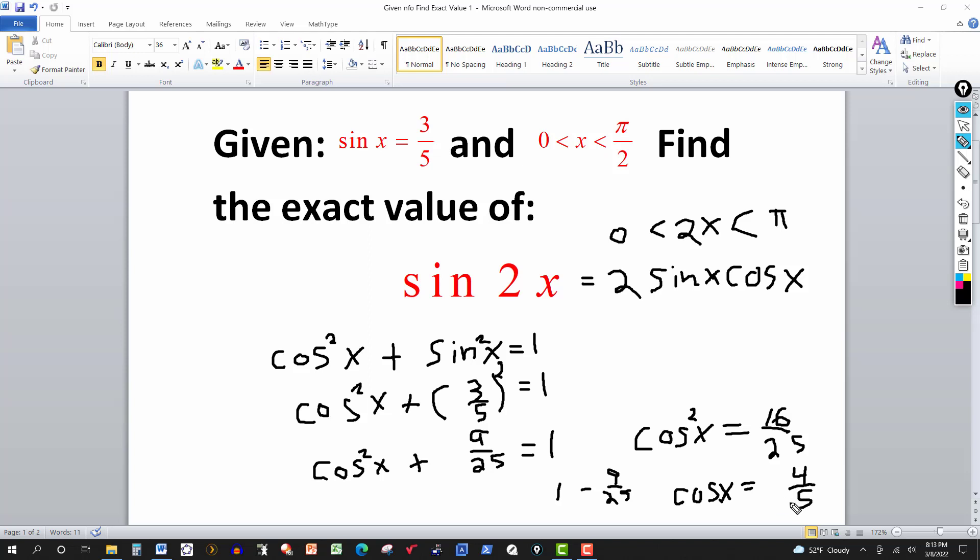And now we have to decide, is that a positive four-fifths or a minus? Well, the angle here, cosine of x, dealing with that angle that's between zero and pi over 2. So in the first quadrant, the cosine is always positive. So for cosine of x, we have to use the positive value.